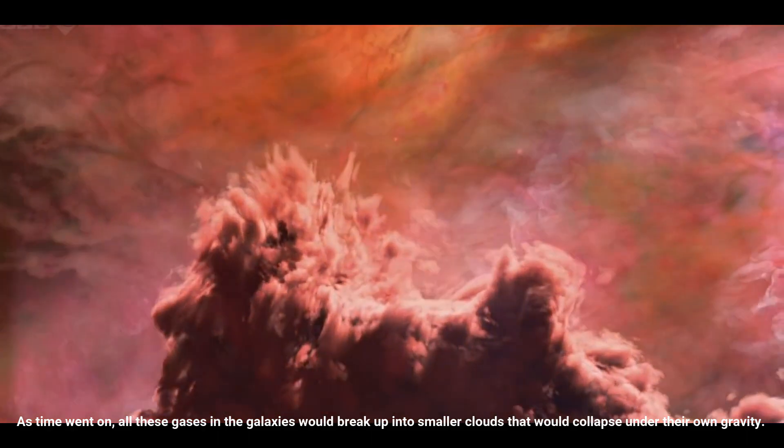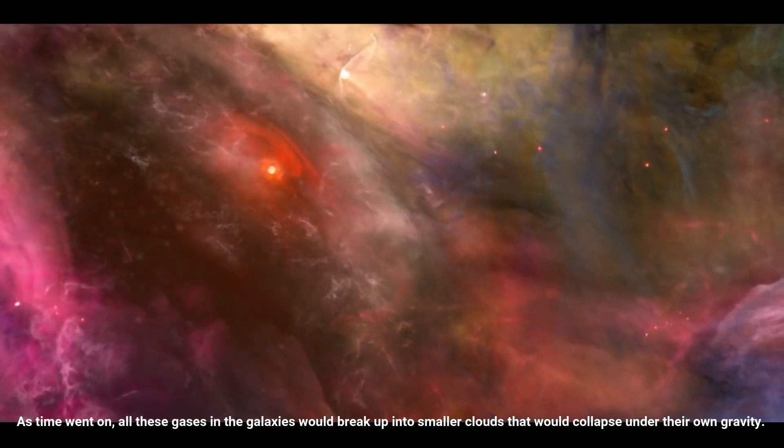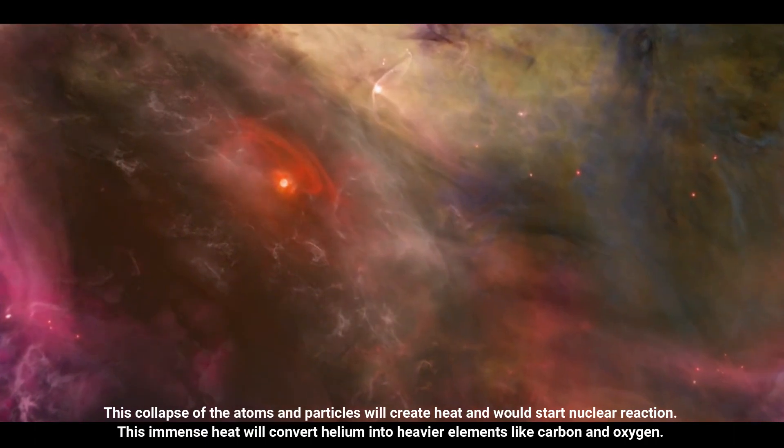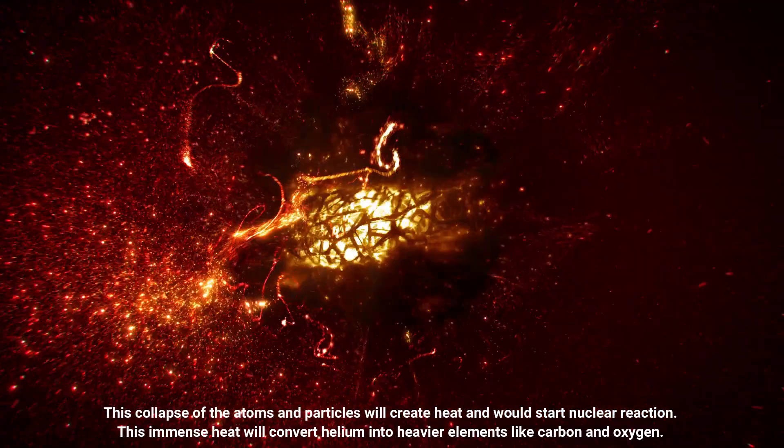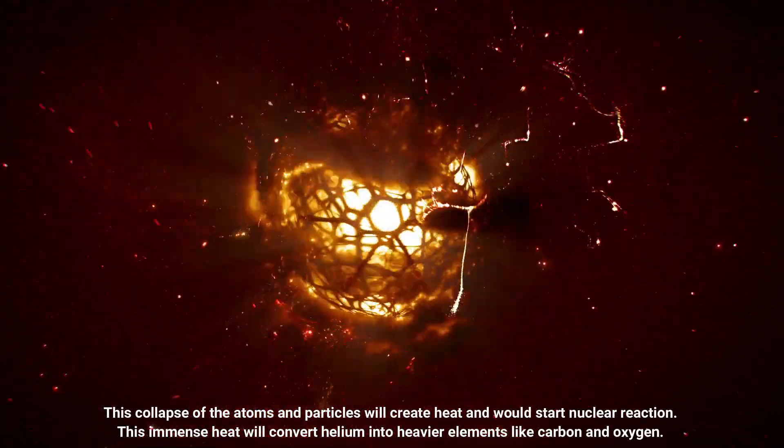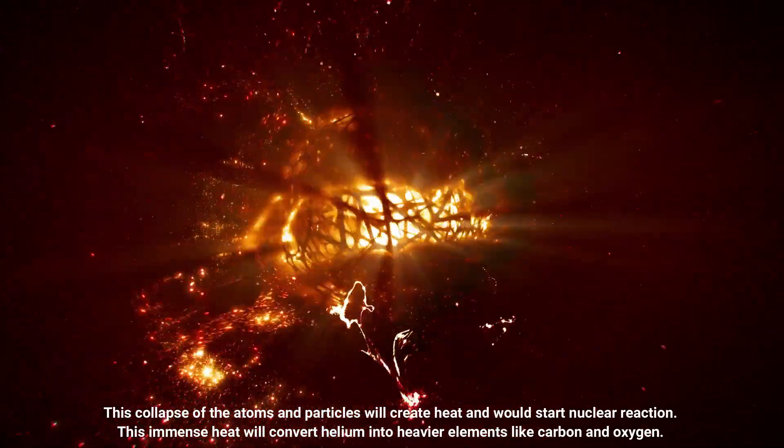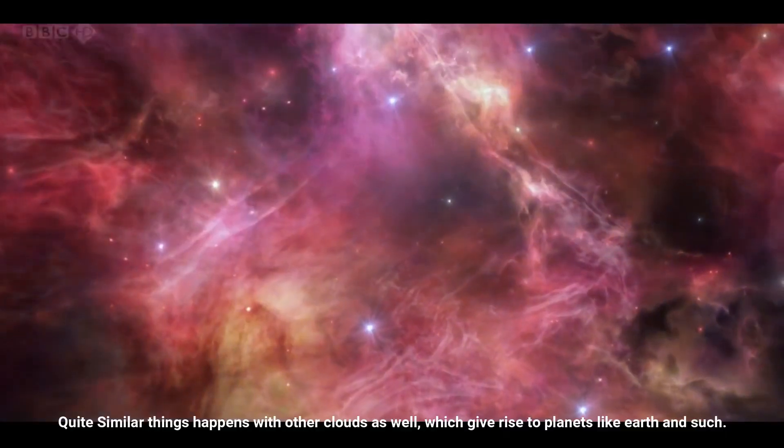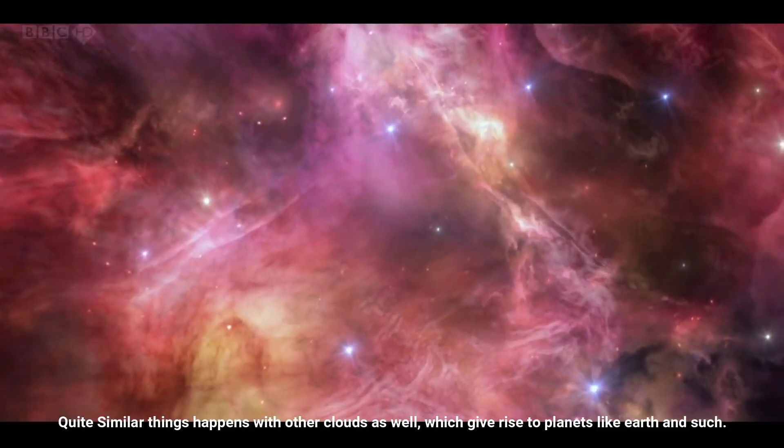As time went on, all these gases in the galaxies would break up into smaller clouds that would collapse under their own gravity. This collapse of the atoms and particles will create heat and would start nuclear reactions. This immense heat will convert helium into heavier elements like carbon and oxygen. Quite similar things happen with other clouds as well, which give rise to planets like Earth and such.